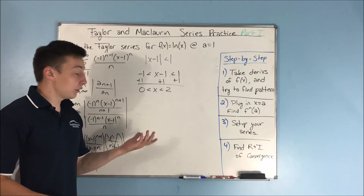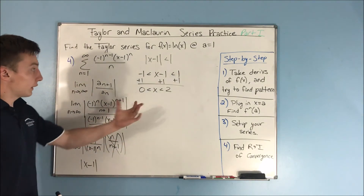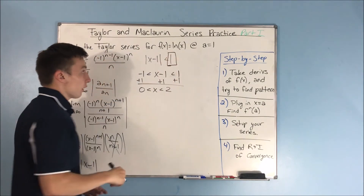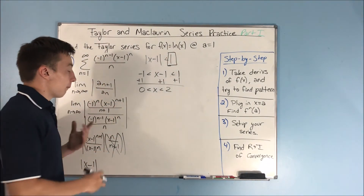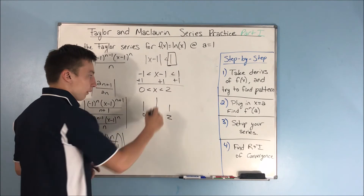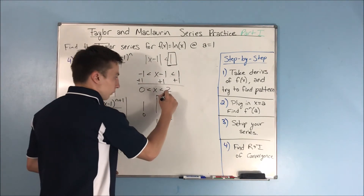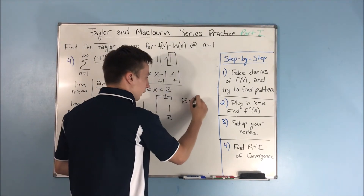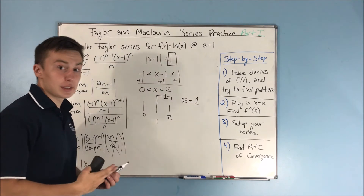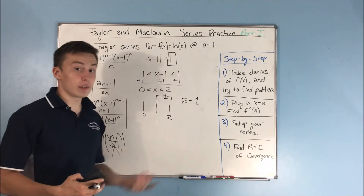Now you just have to test the endpoints. Also, what's the radius of convergence? Well, the radius of convergence is just 1 — that's apparent here. Your interval is from 0 to 2, the center of your interval is 1, and from the center to the outside — like the radius of a circle — that's 1. So your radius of convergence is 1. It's easier to find the radius of convergence this way, but if you want to find it without the interval, there's a nice easy way to do it.